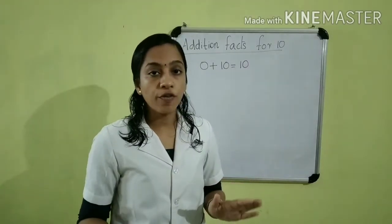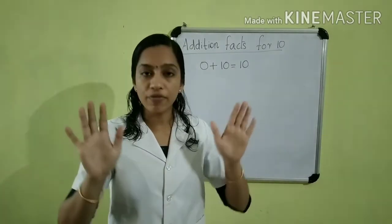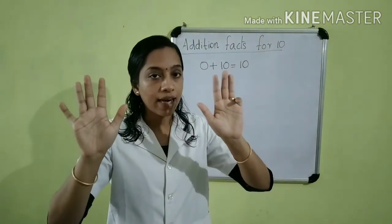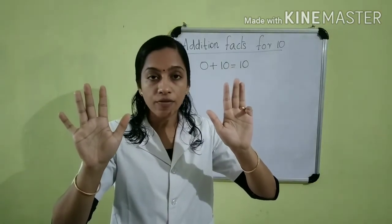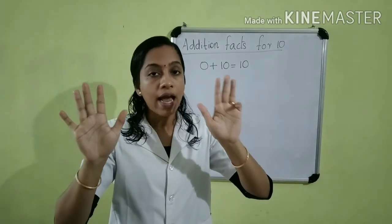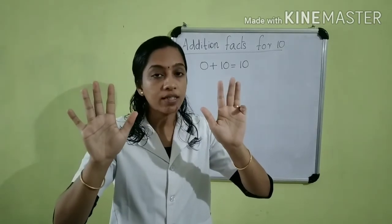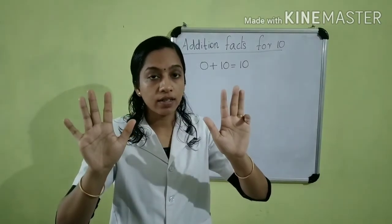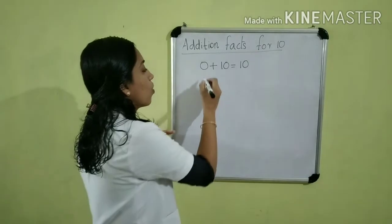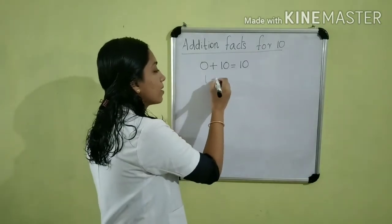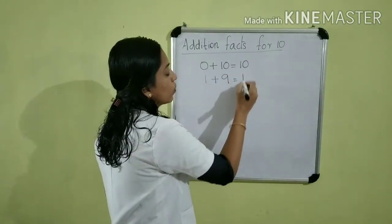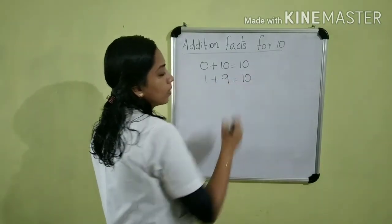Then I am going to fold one of my fingers, like this. Then tell me children, how many fingers are folded? 1. And how many fingers are extended? 9. So we can write, 1 plus 9 is equal to 10.